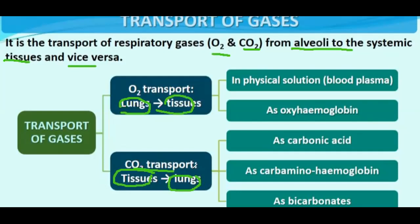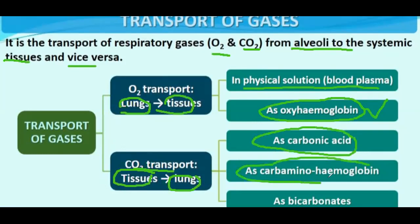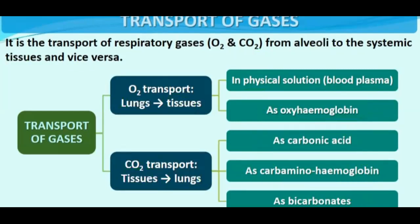Oxygenated blood goes to various parts of the body. Oxygen transport occurs in two ways: dissolved in blood plasma and in the form of oxyhemoglobin. Carbon dioxide transport occurs in three ways: as carbonic acid, as carbaminohemoglobin, and as bicarbonate ions.